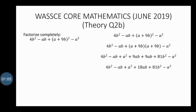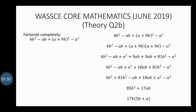Simplifying by collecting like terms: 4b² plus 81b² gives 85b², minus ab plus 18ab gives 17ab, and a² minus a² gives 0. So we have 85b² plus 17ab. We factorize 17b out and are left with 5b plus a. Therefore, the fully factorized result is 17b(5b + a).